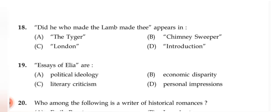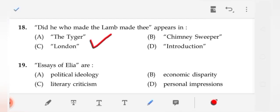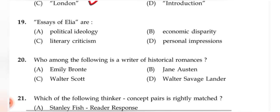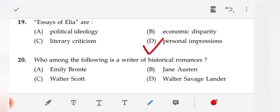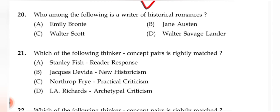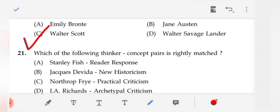Question 18: 'Did he who made the lamb make thee?' appears in 'The Tyger.' Question 19: The 'Essays of Elia' are personal impressions. Question 20: Who among the following is a writer of historical romance? The correct answer is Walter Scott.